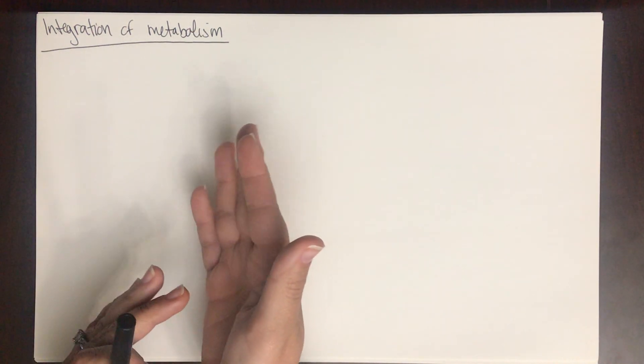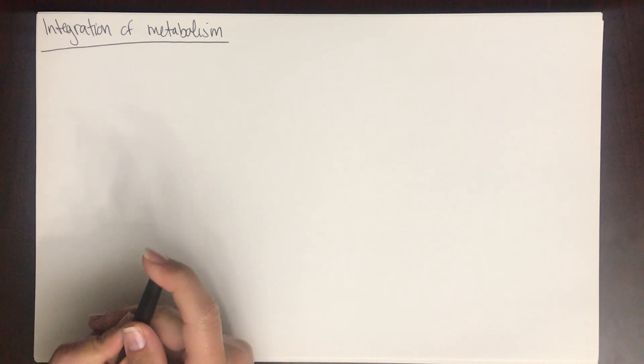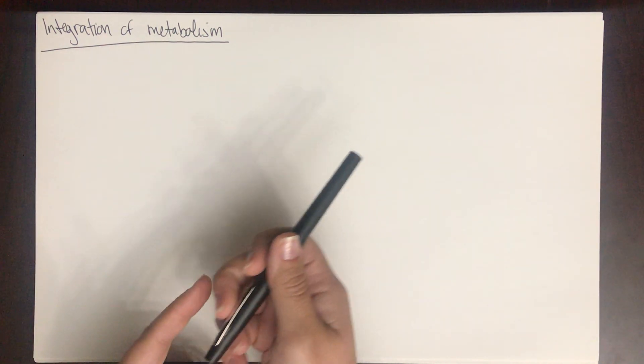We're going to talk about the integration of metabolism. We've talked about some of the major pathways in cellular respiration: taking one molecule of glucose through glycolysis, converting it to two molecules of pyruvate, converting those pyruvate to acetyl-CoA. Acetyl-CoA goes into the citric acid cycle, and then all of the electron carriers loaded up through that whole process go to the electron transport chain, where we make ATP.